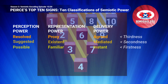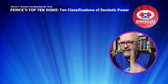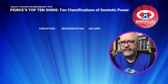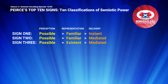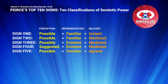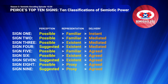Each of the ten sign classes' power comes from how the perception, representation and delivery interact. To end this episode, let me list the ten signs' power in designer-centric terms. One: possible, familiar, instant. Two: possible, familiar, mediated. Three: possible, existence, mediated. Four: suggested, existence, mediated. Five: possible, familiar, agreed. Six: possible, existence, agreed. Seven: suggested, existence, agreed. Eight: possible, proxy, agreed. Nine: suggested, proxy, agreed. And ten: resolved, proxy, agreed. What the viewer can see from this list, beyond any initial word soup, are combinations of how semiotic sign action can enhance the effectiveness of visual communication.